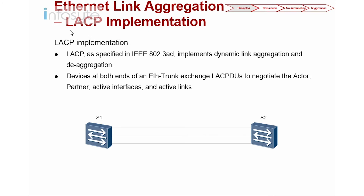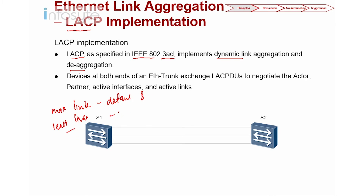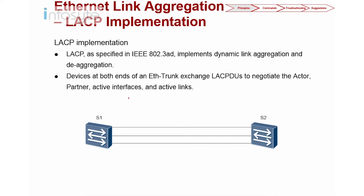Let's look into the LACP implementation. LACP is a standard under 802.3AD and supports dynamic link aggregation as well as de-aggregation, meaning there is a maximum link count and a minimum link count. The maximum active links defaults to eight, and the minimum required for the trunk to come up defaults to one. Devices at both ends of the EtherTrunk exchange LACP PDUs — Link Aggregation Control Protocol Data Units — to negotiate actor and partner active interfaces and active links.